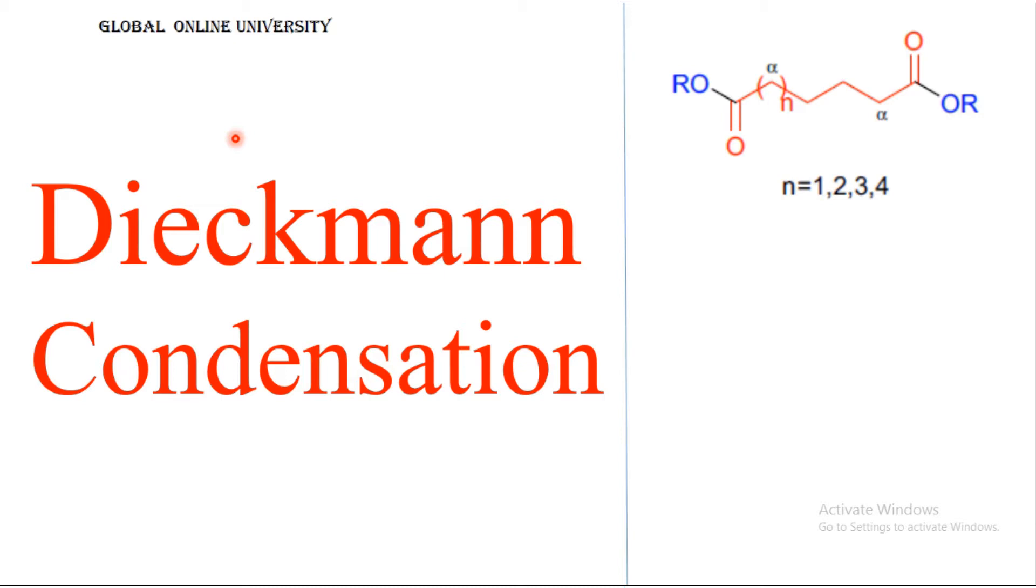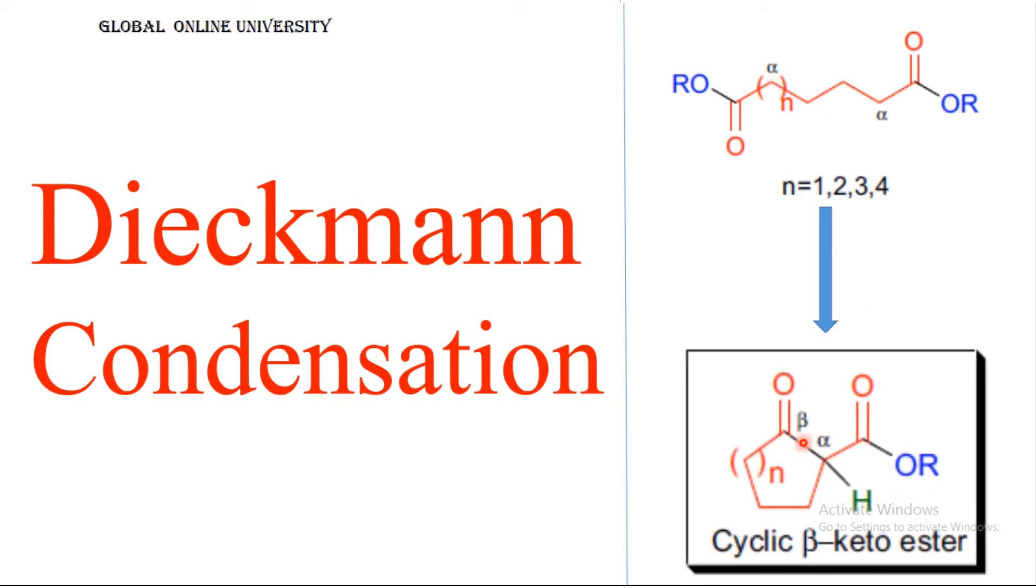Dieckmann condensation is the condensation between two esters containing an alpha hydrogen in the presence of base to get a beta-keto ester. You can see here these two esters have an alpha hydrogen to get enolized and attack on another ester, so we get a cyclic ester known as a beta-keto ester.